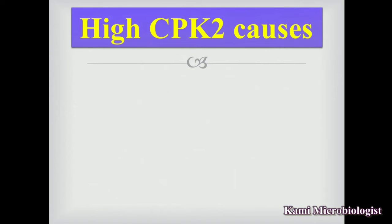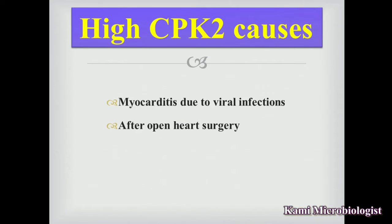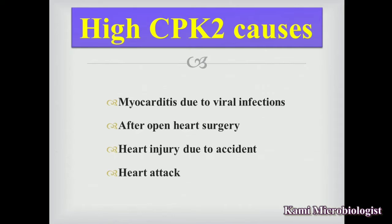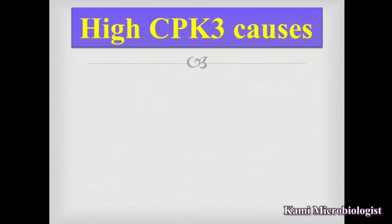Next we have the main causes of high CPK-2. High CPK-2 may be caused by myocarditis due to viral infection — myocarditis means inflammation of the cardiac muscles. It can also be caused by open heart surgery, where CPK-2 levels may rise afterward, heart injury due to an accident, and heart attack, all of which will cause CPK-2 levels to get high in the blood.